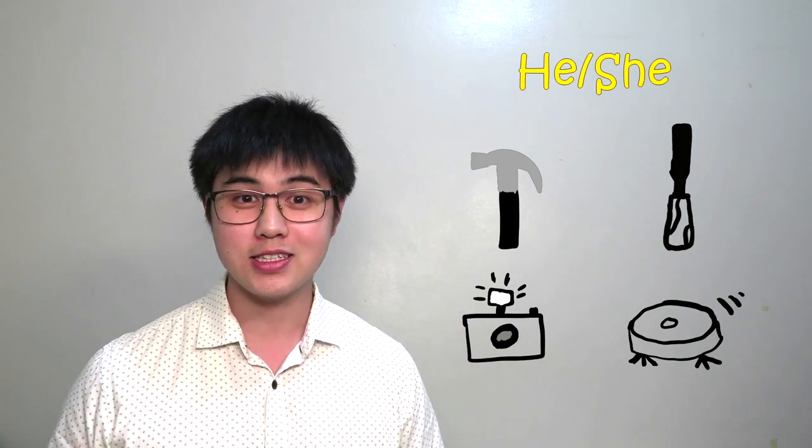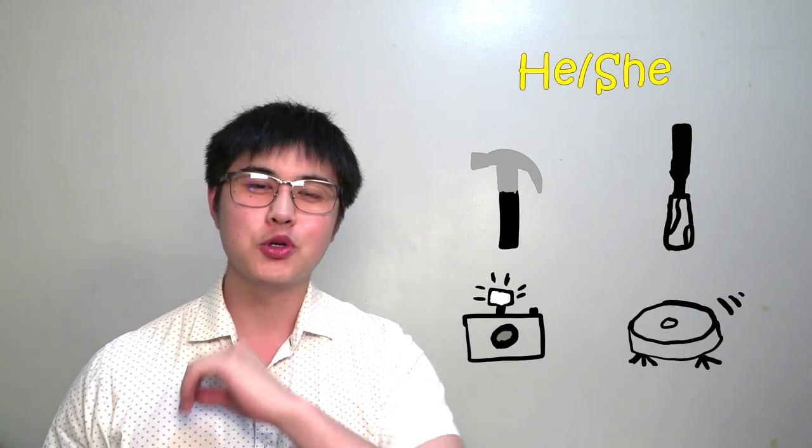Someone might call an item she because the object might have some characteristics of women. For example, beautiful, elegant, or pleasing. And people who use he may see an object as powerful and sturdy.